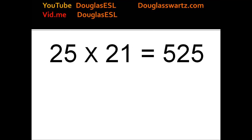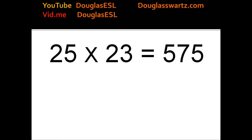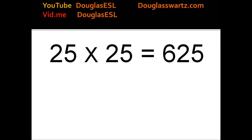25 times 21 equals 525. 25 times 22 equals 550. 25 times 23 equals 575. 25 times 24 equals 600. 25 times 25 equals 625.